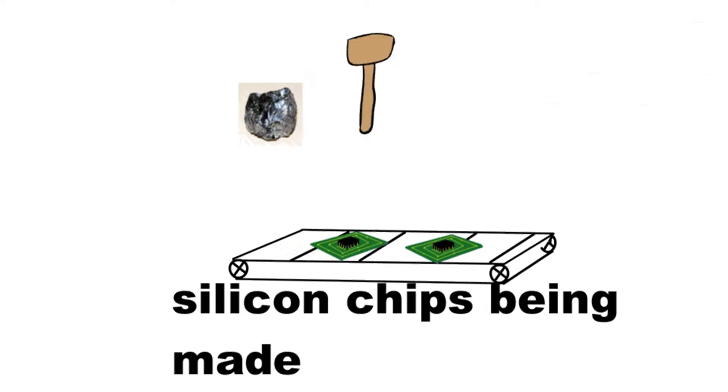Silicon is used to make electronic devices like phones, tablets, and cameras because it is an excellent semiconductor.